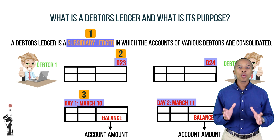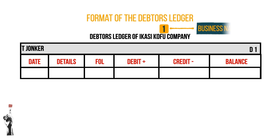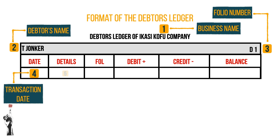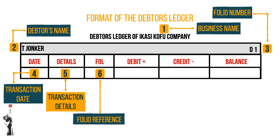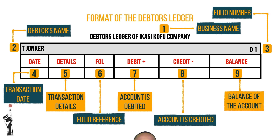Now that you know the purpose of a debtor's ledger, let's look at its format. Here is the debtor's ledger of Ikasi Kofu Company. Number one: the business name. Number two: the name of the debtor. Number three: the folio number or ledger account number, which is unique to the debtor — in this example it is D1. Number four: the date of the transaction. Number five: details of the transaction. Number six: folio reference from where the transaction was posted. Number seven: the account is debited because an asset increases. Number eight: the account is credited because an asset decreases. And lastly, number nine: the running total or balance of the account — each time a transaction is entered it is either added for a debit or subtracted for a credit from the previous line's balance.